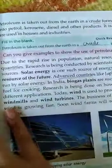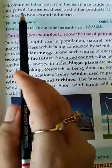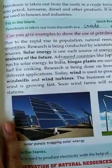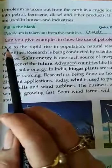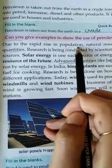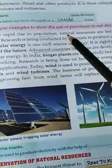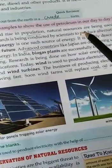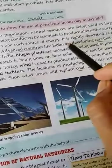These refined products are used in houses, industries, and vehicles. These resources are non-renewable resources. Due to the rapid rise in population, these natural resources are in limited quantities, so we have to use them in a limited form.